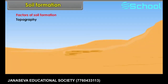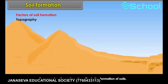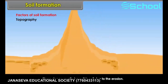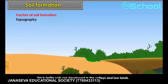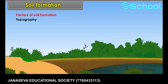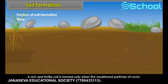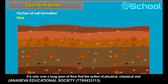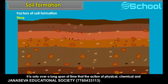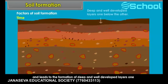Topography of a region also affects the formation of soils. It is only over a long span of time that the action of physical, chemical, and organic processes takes place and leads to the formation of deep and well-developed layers, one below the other.